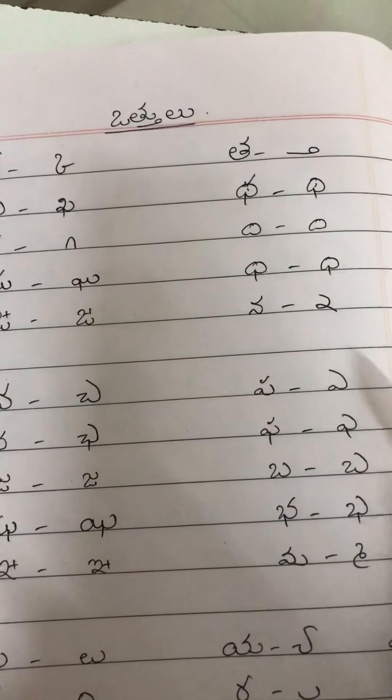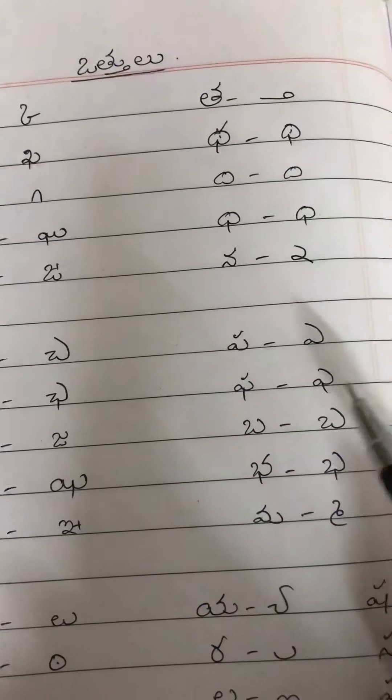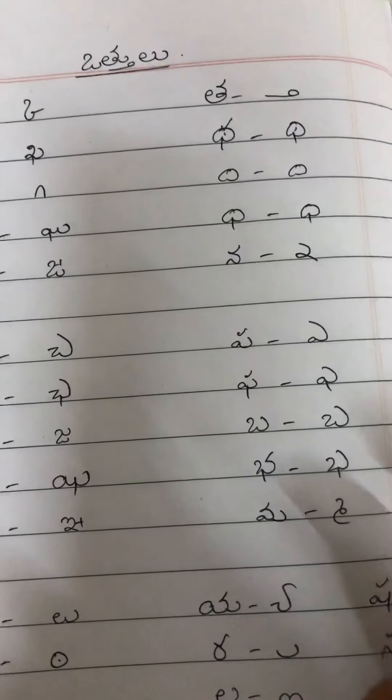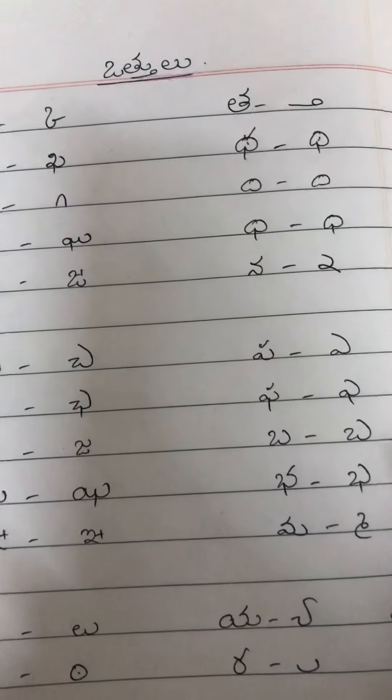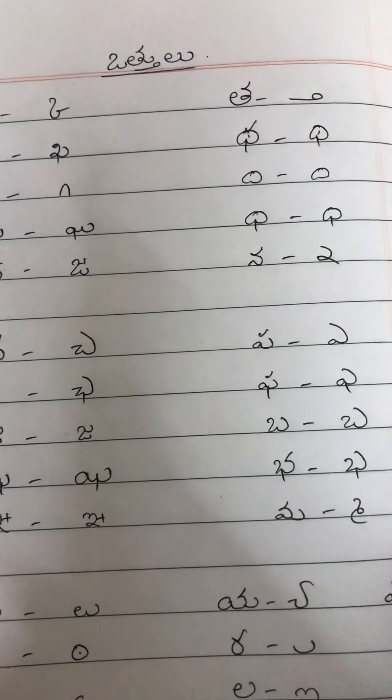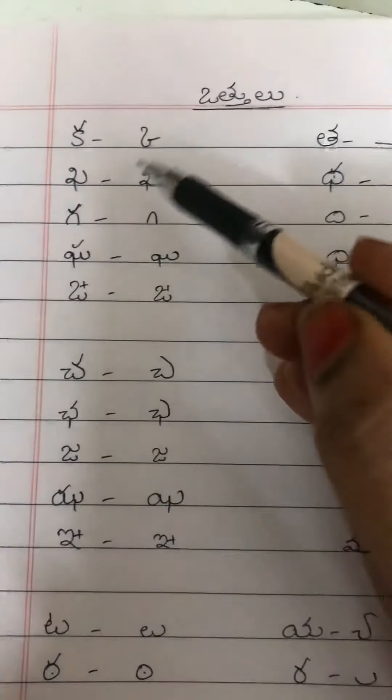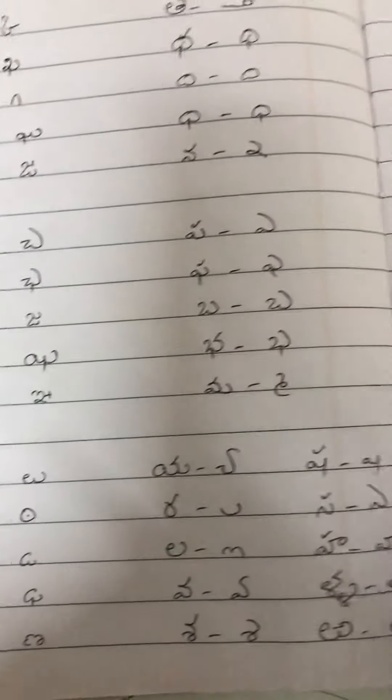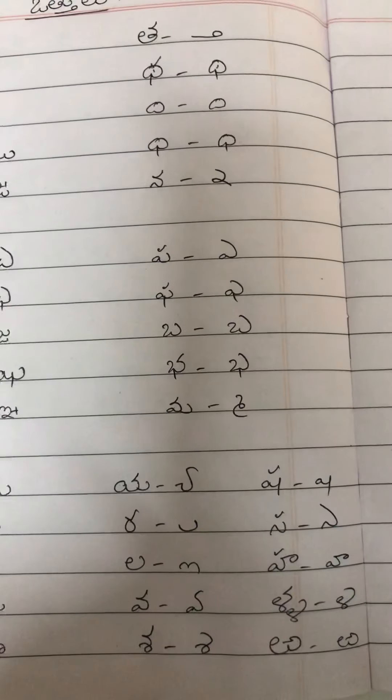As you all know, Achilu ki Gurtilu n'tai, Hallulu kuda Gurtilu n'tai. Achilu also have some symbols. Hallulu also have some symbols. Achilu symbols are called Gunintapu Gurtilu, which we use to write Gunintamulu. Hallulu symbols are called Ottilu. So you can see this. We have given the list to you also.